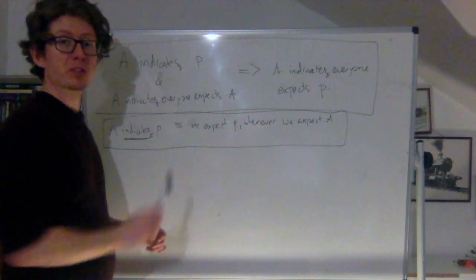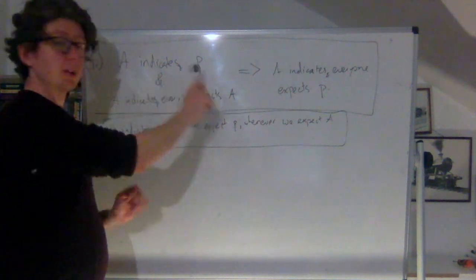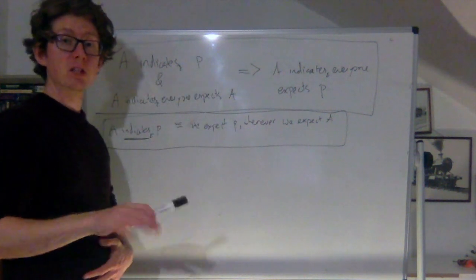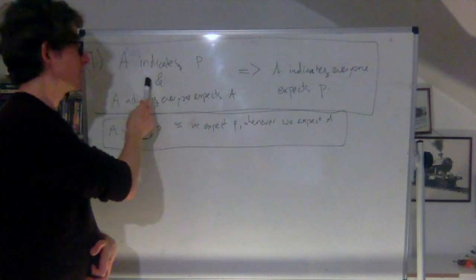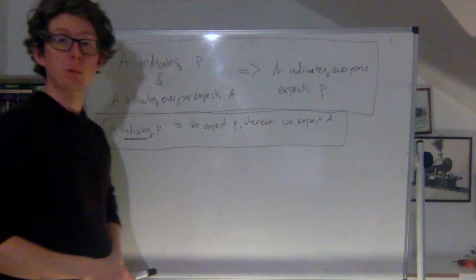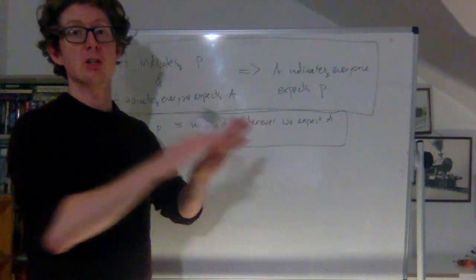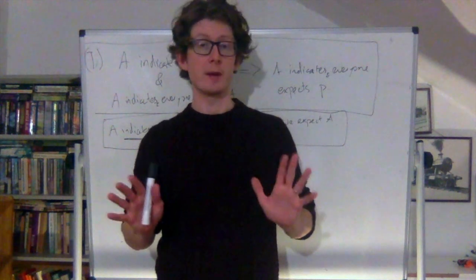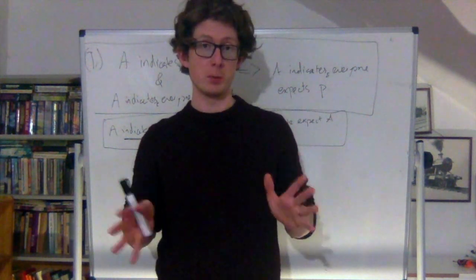This principle gives you the ability to go from one level of expectation to the next. For now, I'm just going to assert that this principle holds, and say something at the end of the video about why we should think it holds. But for now, assume that this holds, and we can show why there's this connection between common expectation and expectation at every level. So for concreteness, let's focus on a particular situation - the situation that Lewis talks about in the book.